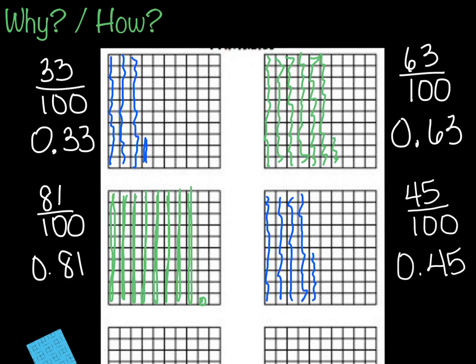Pretty easy, right? All I've got to do is count my squares, put it over 100, boom, I've got my fraction, and then I turn that into a decimal.